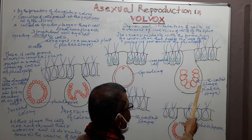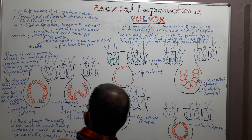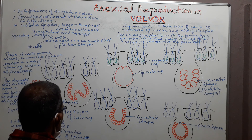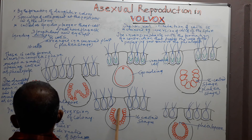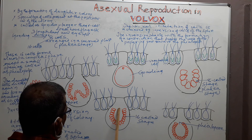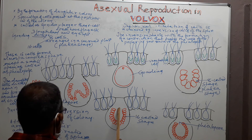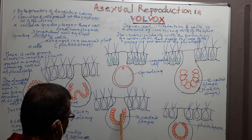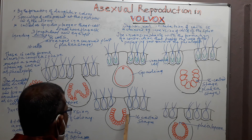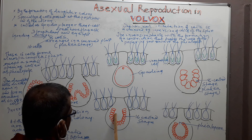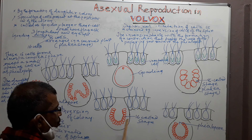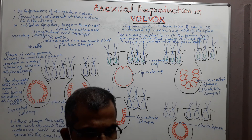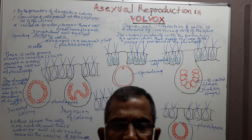These eight daughter cells divide again to form almost a complete sphere with a narrow opening. Then the sphere will be inverted. By the inversion of the sphere, the orientation of the cells will become normal. This results in the formation of a young Volvox colony. When the mother colony disintegrates, the young colonies are released to the outside and undergo maturation to form a new mother colony.